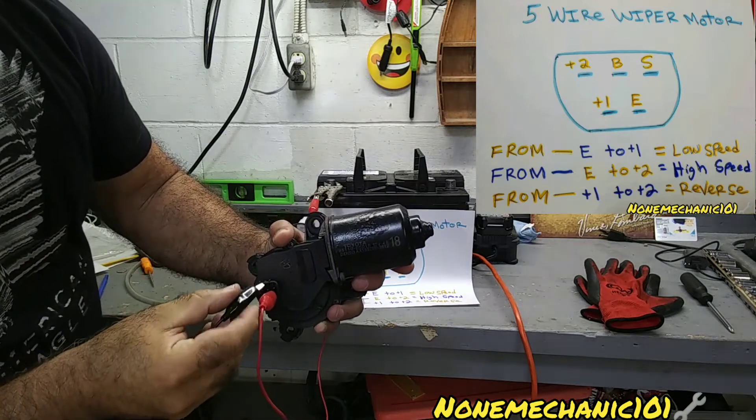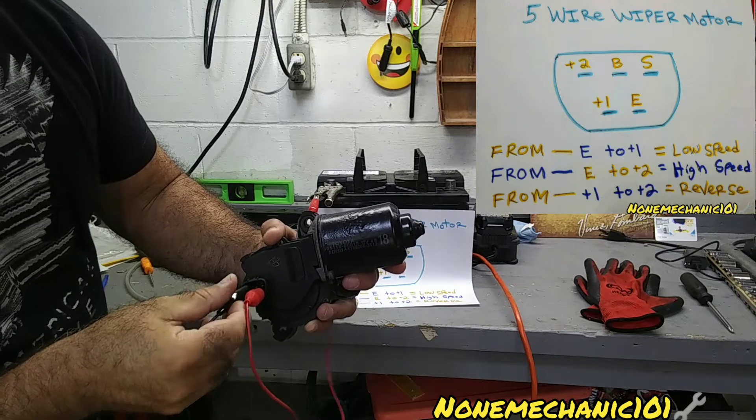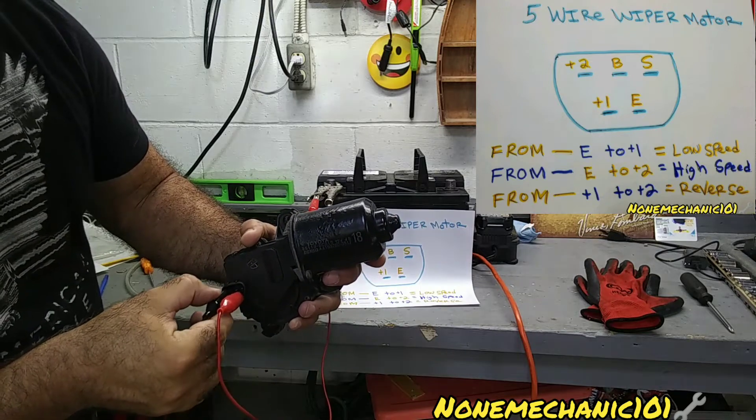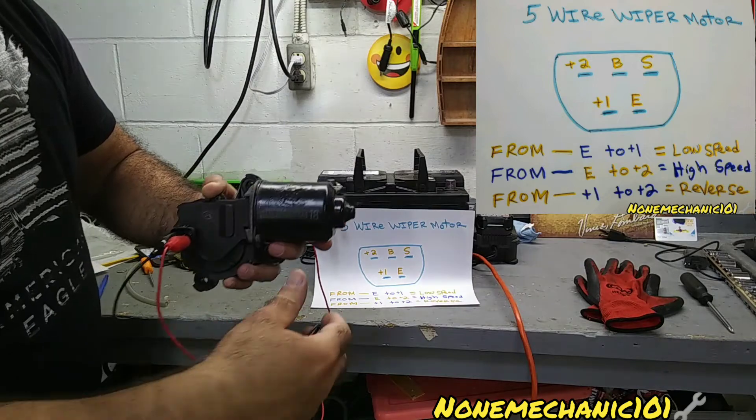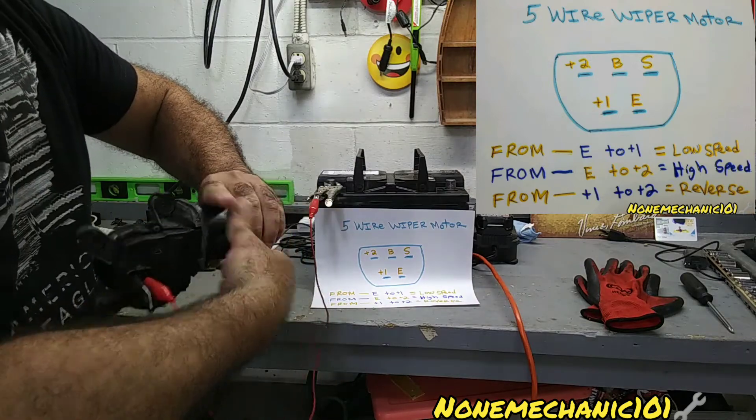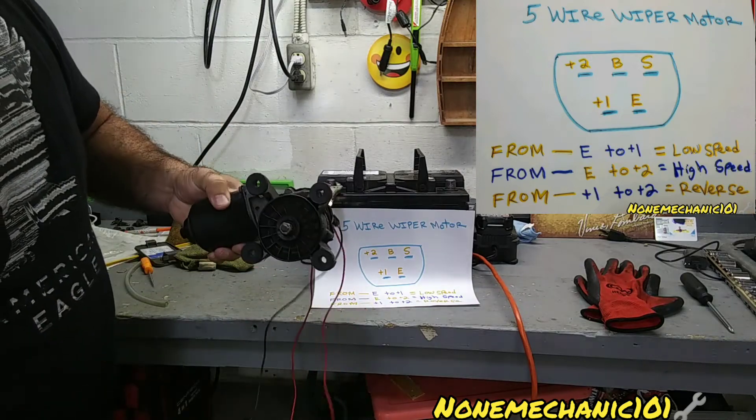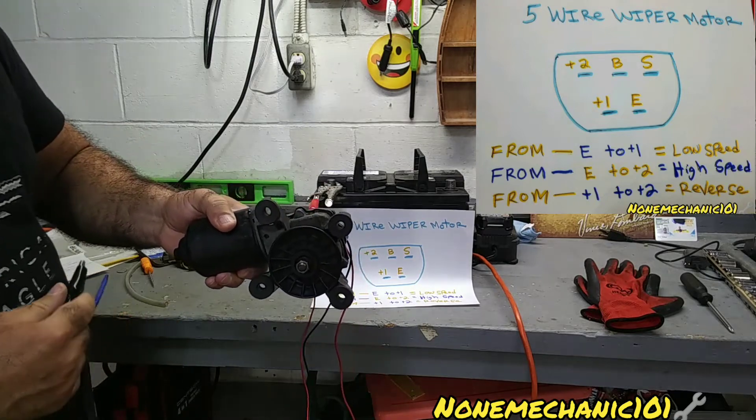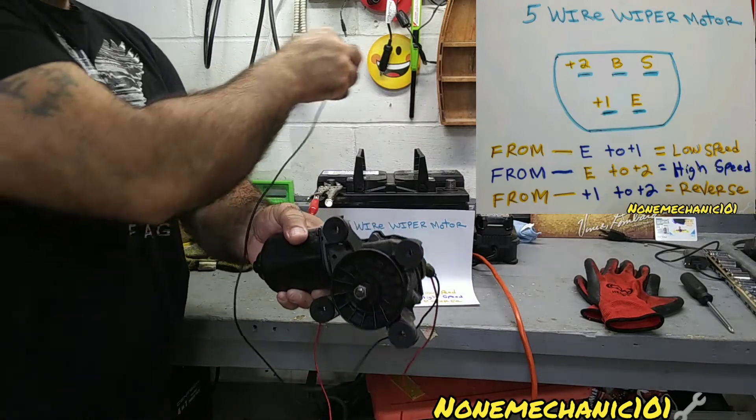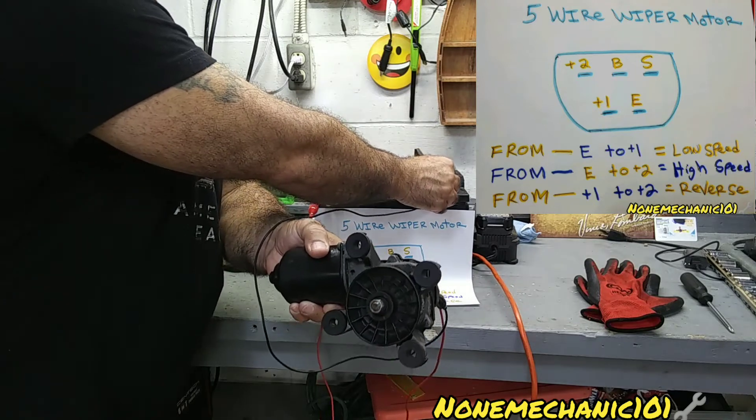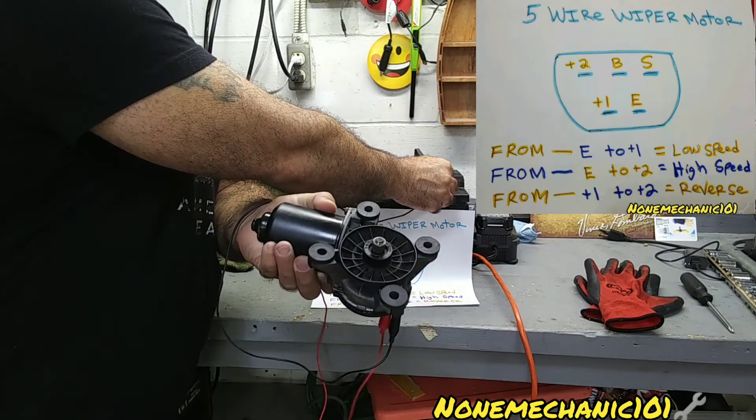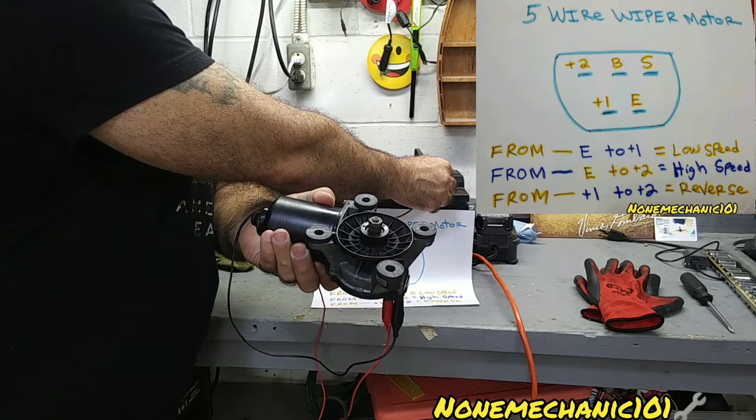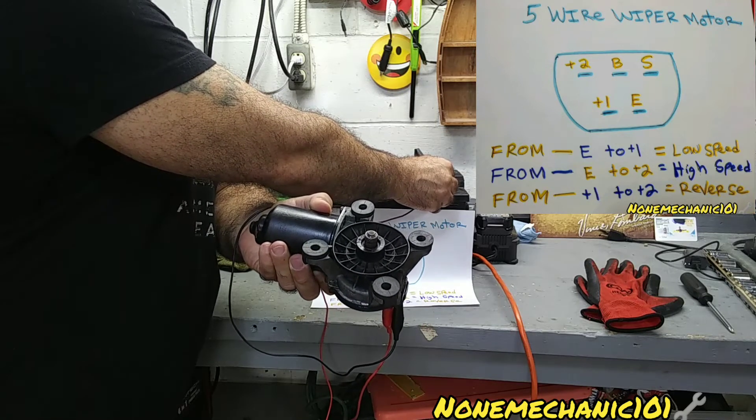Okay, now all we're going to do is turn this, and that's going to be high speed from E to +2. There it goes. See how fast it's going? So if you have a problem with your high speed, that's the way you check it.